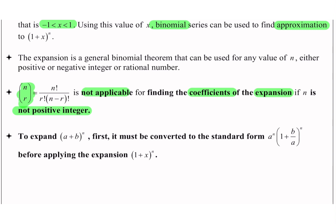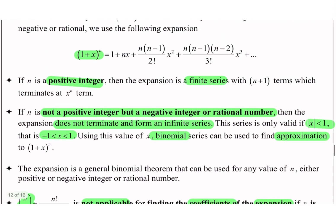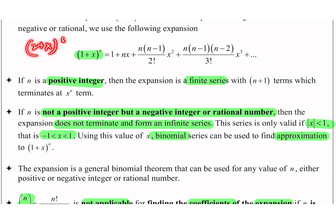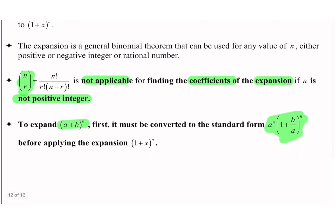To expand (a + b)^n, first it must be converted to the standard form a^n · (1 + b/a)^n before applying the expansion (1 + x)^n. So kena make sure dekat sini, kalaulah saya ada (a + b)^n, saya kena modify dia dulu. Nak expand (a + b)^n, saya kena modify dia supaya dia jadi bentuk tu. Sebab saya punya expansion ni, formula dia adalah (1 + x)^n. Jadi, kalau saya ada (2 + x)^(5/2), saya kena make sure 2 dekat sini kena convert jadi 1 dulu — baru boleh apply. Sebab itulah dia tunjuk macam mana nak factorkan 2 tu keluar.